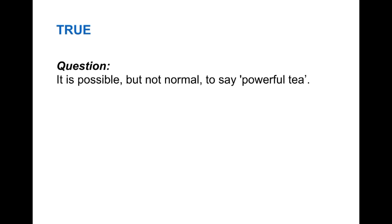Here's the first question: 'It is possible, but not normal, to say powerful T.' This is a True, False, or Not Given question. The first thing before looking at the passage is to underline some keywords. I underlined: possible, not normal, say powerful T. I think 'powerful T' is our main phrase — the main keywords — because they're very strong words we can search for easily.